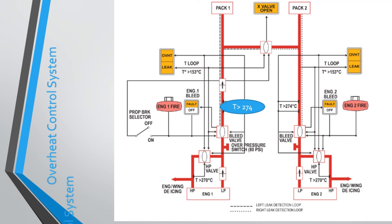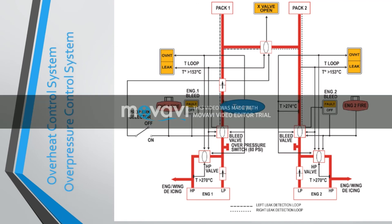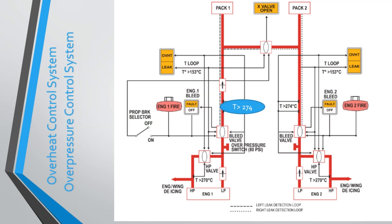Overpressure Control System: A pressure switch is fitted on the bleed air duct upstream of the bleed air shut-off valve. When the air bleed pressure is greater than 80 psi, the overpressure switch sends a signal to the EMFC, which closes the bleed air shut-off valves. A fault light illuminates on the corresponding air bleed push button.